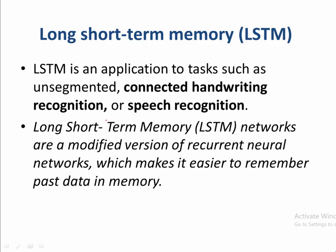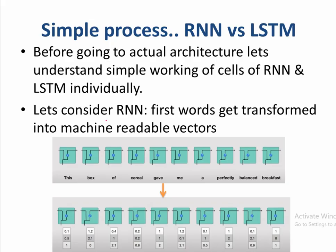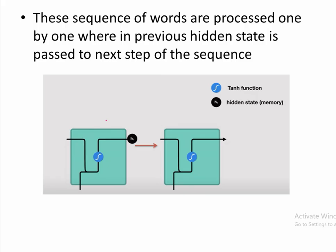LSTM is a modified version of RNN which helps retain information — it's easier to remember past data in memory. Comparing RNN and LSTM: in an RNN, to identify the sentiment of a sentence like 'this box of cereal gave me a perfectly balanced breakfast,' it goes through an embedding layer where words are converted into vector representations, then processed one by one with a hidden state passed to the next state.